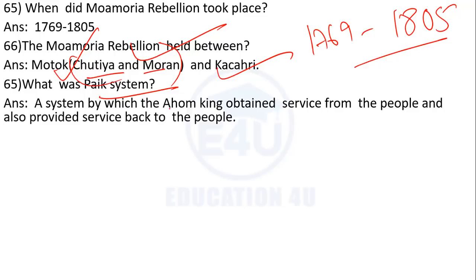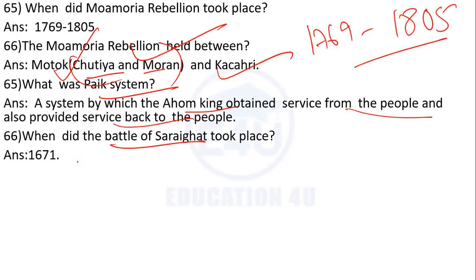The Paik system — what is it? It is a system by which Ahom kings obtained service from the people and also provided service back to the people. Under this system, people gave service to the Ahom king and in return the king provided service back to them.